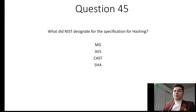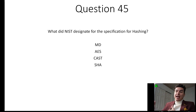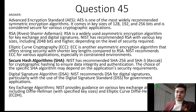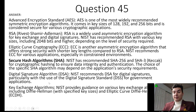What did NIST designate for the specification for hashing? NIST is the National Institute of Standards and Technology and it provides guidance and recommendations for encryption of electronic information and how to handle data. For hashing, they recommend SHA. For encryption, one of the main ones is the Advanced Encryption Standard (AES), which is the most popularized encryption in the United States. They also suggest RSA, elliptical curve cryptography, and for signatures, the Digital Signature Algorithm. For key exchange, Diffie-Hellman or Elliptic Curve Diffie-Hellman.